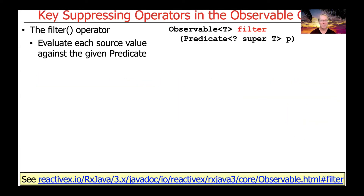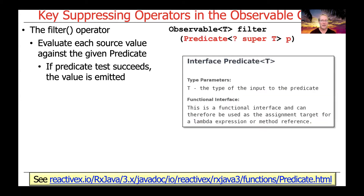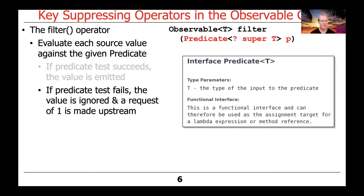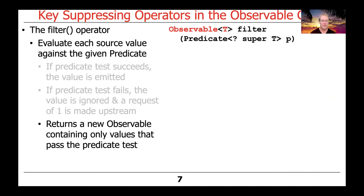Let's start by talking about the filter operator. This operator evaluates each source value against the given predicate, which is passed as a parameter. If the predicate test succeeds, filter will emit the value. In contrast, if the predicate test fails, the value will be ignored and filter will make a request upstream for the next item. Filter returns a new observable that only contains values that pass the predicate test.